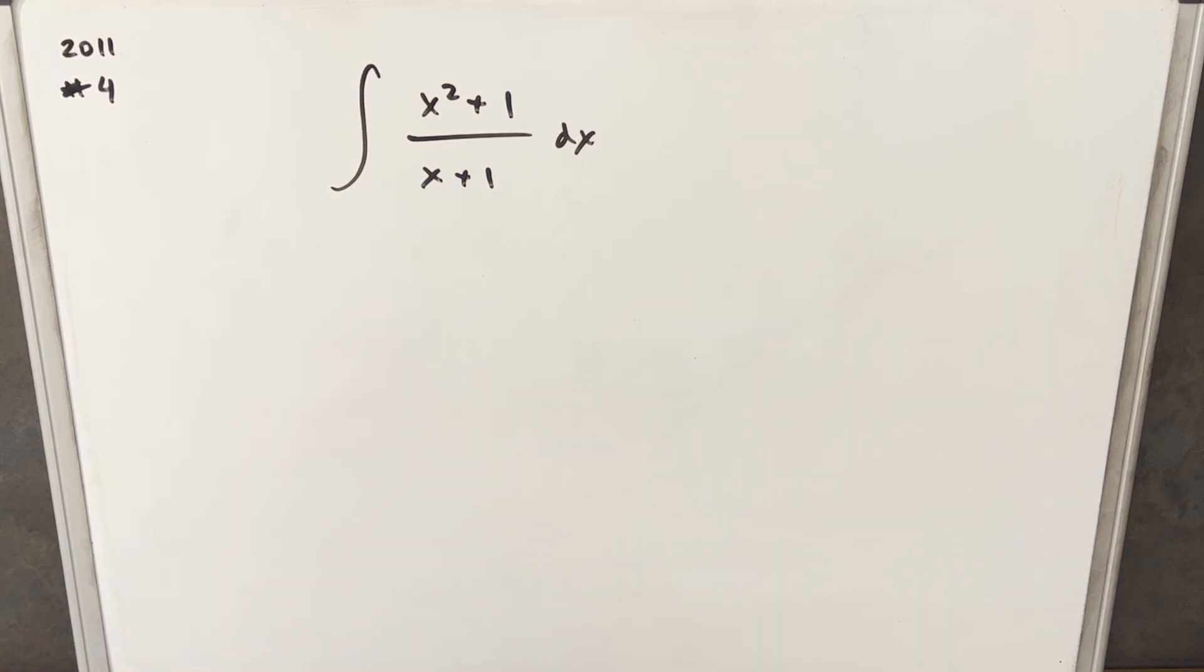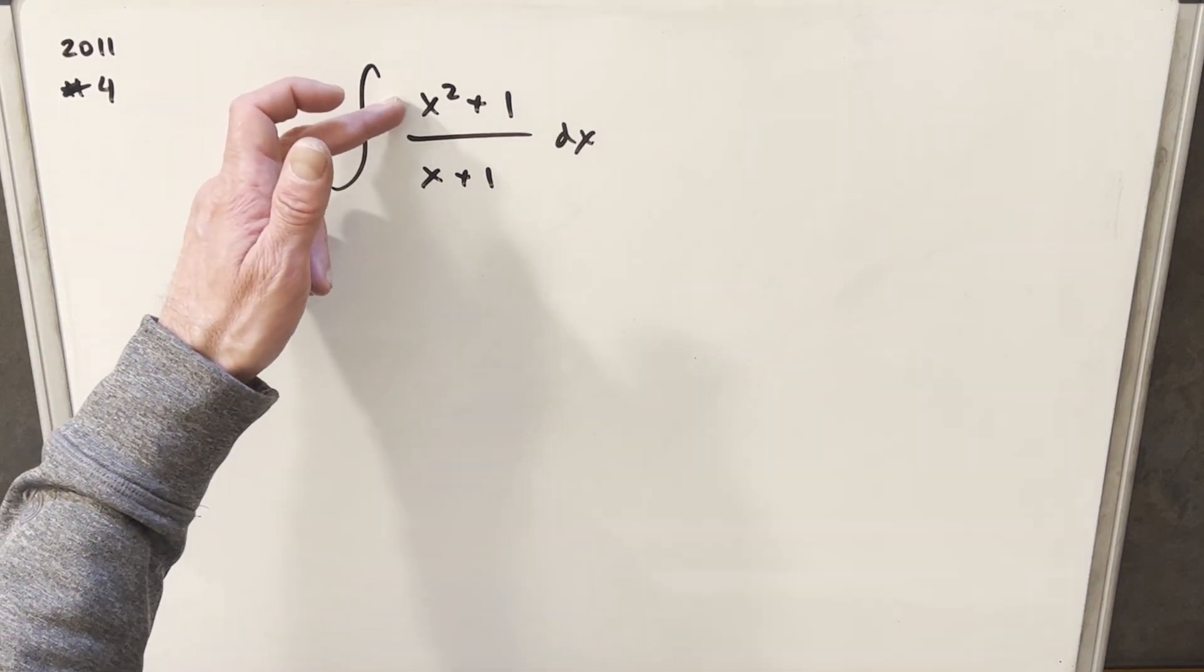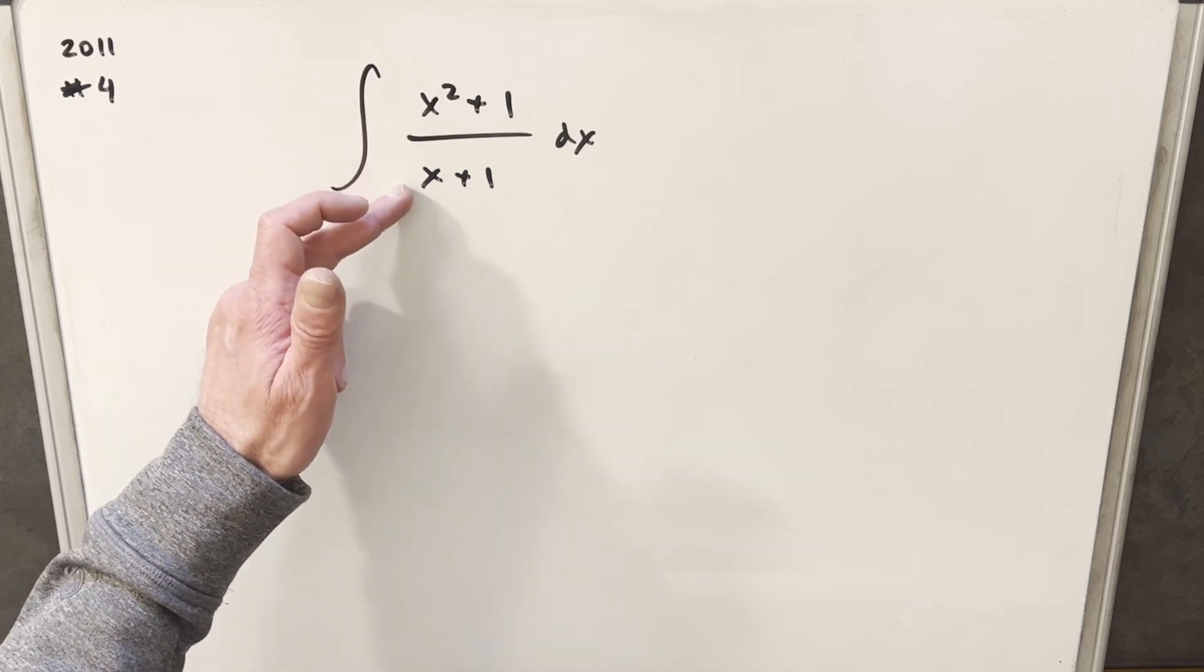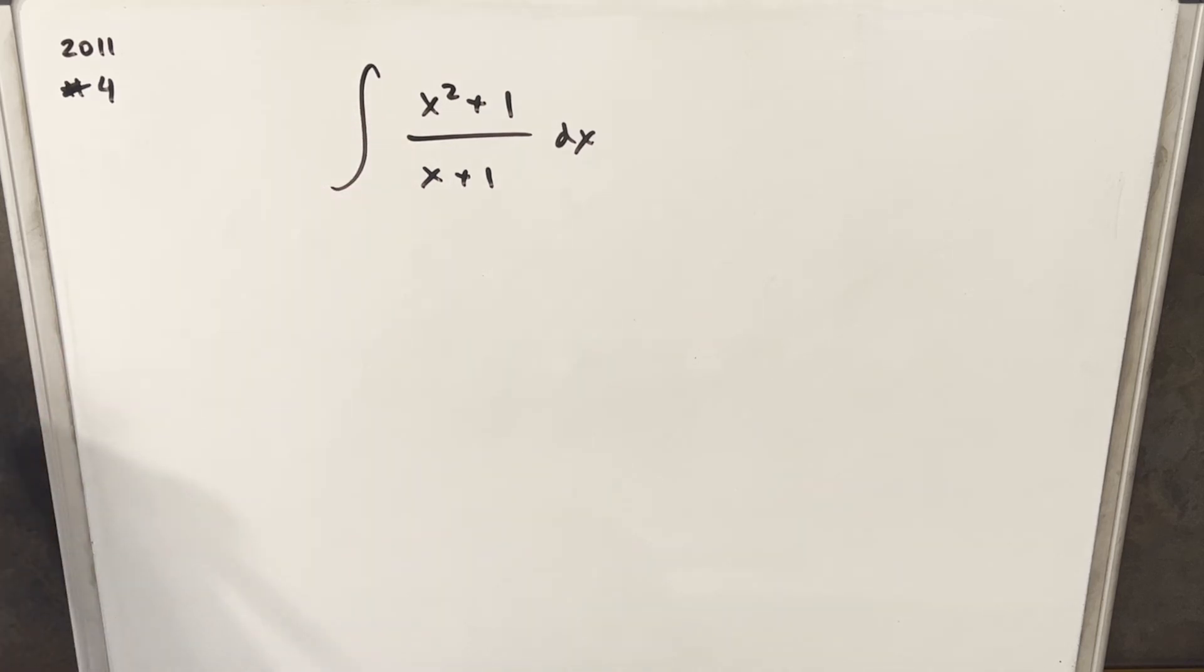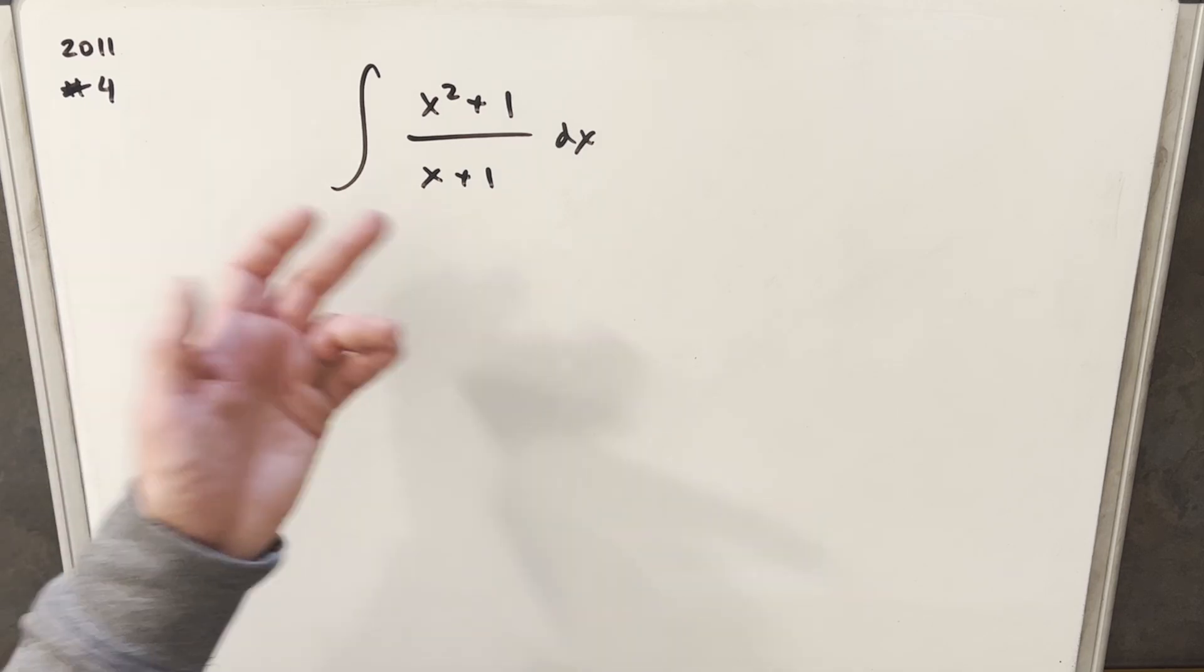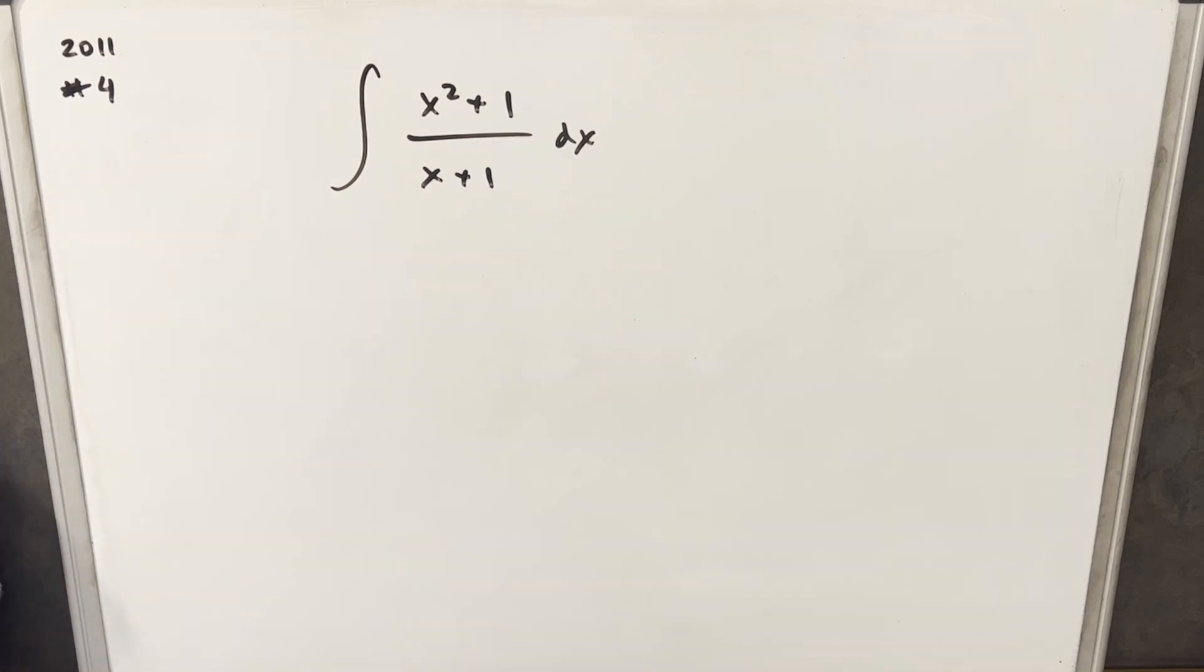Okay, a couple things I noticed. The standard thing you want to do when you have a higher degree in the numerator, higher or the same as the denominator, you could do long division, and the long division is going to be pretty easy in this case. I generally like to skip the long division if I can work it out without it, so we're going to skip the long division.